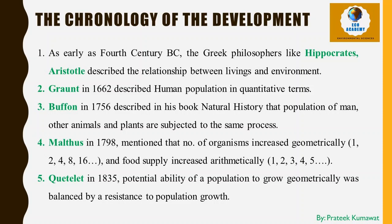Regarding the chronology of the development of environmental science: during the 4th century, Greek philosophers like Hippocrates, Aristotle, and Theophrastus attempted to describe the relationship between living organisms and the environment. Aristotle described this relationship in his book Historia Animalium. Grant in 1662 described human population in quantitative terms, establishing the importance of measuring birth rate, death rate, sex ratio, and age structure. Buffon in 1756 described in his book Natural History that populations of man, animals, and plants are subjected to the same processes.